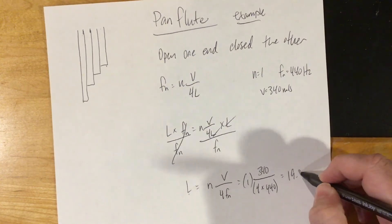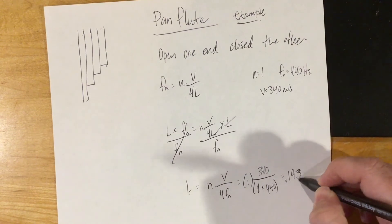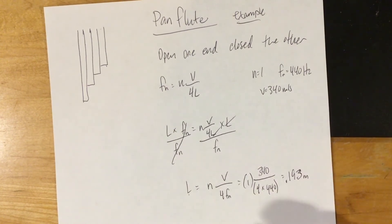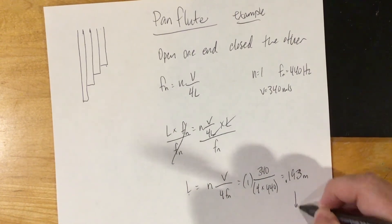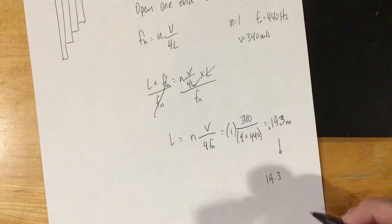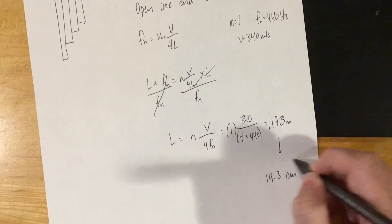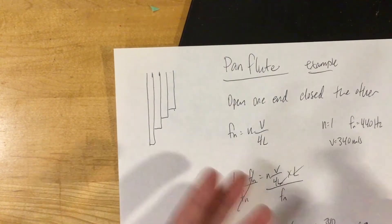You end up with 0.193 meters, and in order to get that into centimeters you'll have 19.3 centimeters. So what that would mean for this pan flute is that if this happened to be whichever one, you would cut that straw to this length.